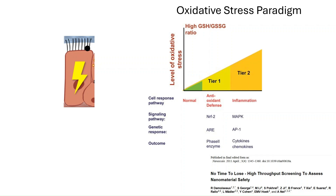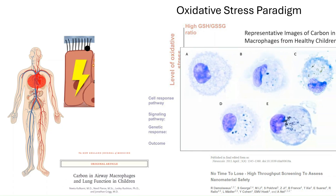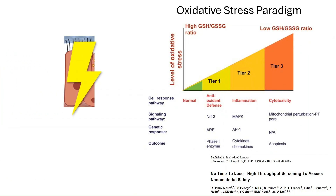If the dose is higher, or the composition of the particulates causes greater oxidative stress, the antioxidant defense is overwhelmed. This leads to a pro-inflammatory response, where the cells release molecular signals to help deal with this injury. This inflammatory response can be local to the lungs, where macrophages are pulled in to remove the particles. If the oxidative stress is high enough, the inflammatory response can become systemic — meaning the response goes far beyond the lungs and begins to trigger a response throughout the body. Finally, if the oxidative stress is high enough, this leads to cytotoxicity, or cell death, which will directly affect the function of the lungs.